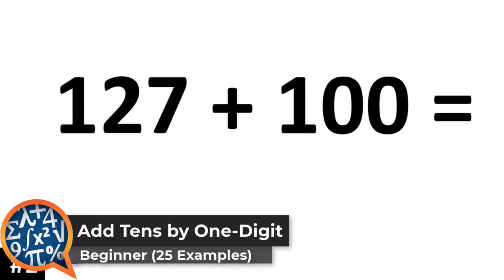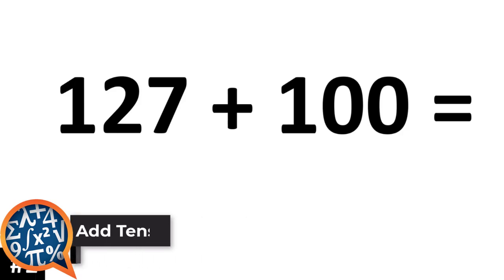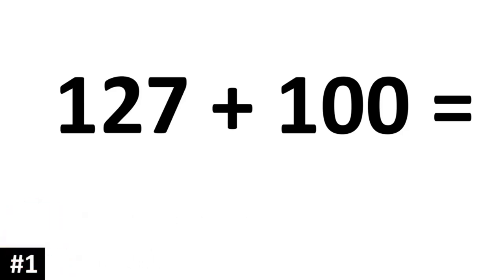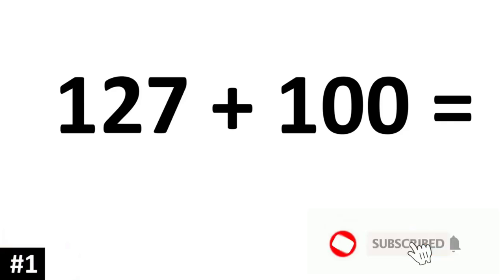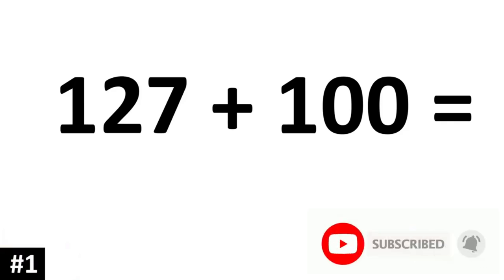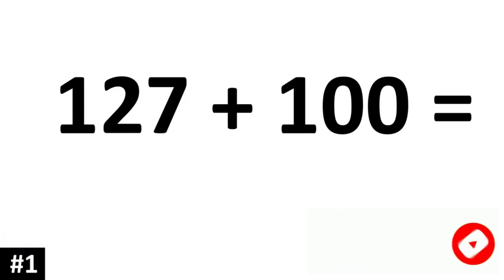In this video, we're going to learn how to add any 3-digit number by 100. The key to adding any 3-digit number by 100 is first identifying the hundreds digit and then going up by 1.